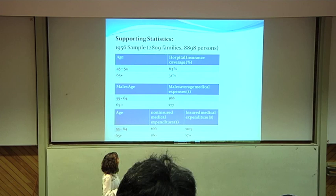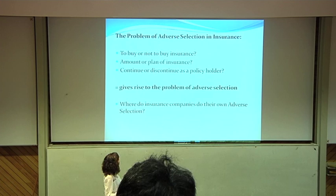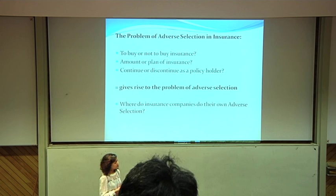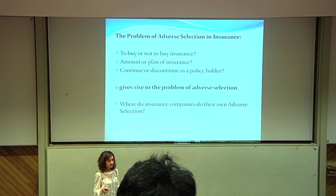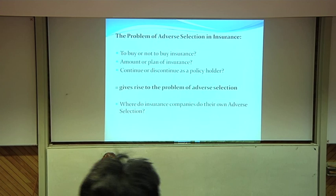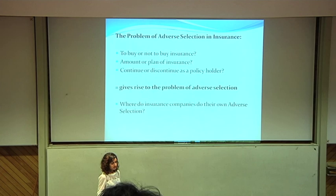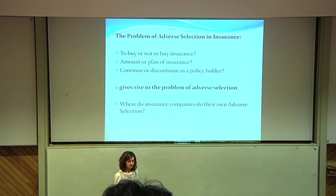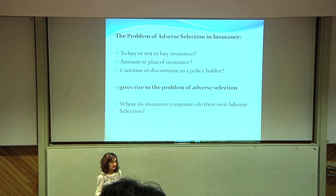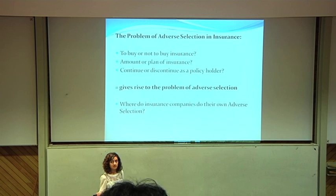Here are some statistics to support Akerlof's analogy. Insurance companies are fully aware of adverse selection in the market, and there are three factors which affect whether there is adverse selection: if the applicant has the choice whether to buy or not buy insurance, the amount or plan of insurance, or whether to continue or discontinue their policy. In the United States, employers will only hire healthy applicants for group insurance, which is a sufficient condition of employment. This means they are doing their own adverse selection, because only healthy applicants are hired, leaving out the least healthy people who need the most cover.